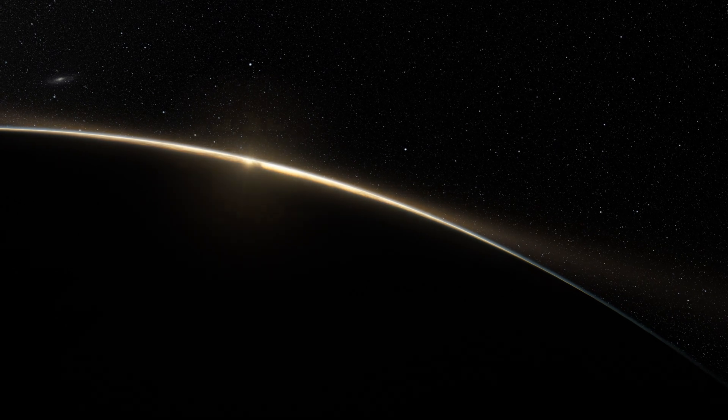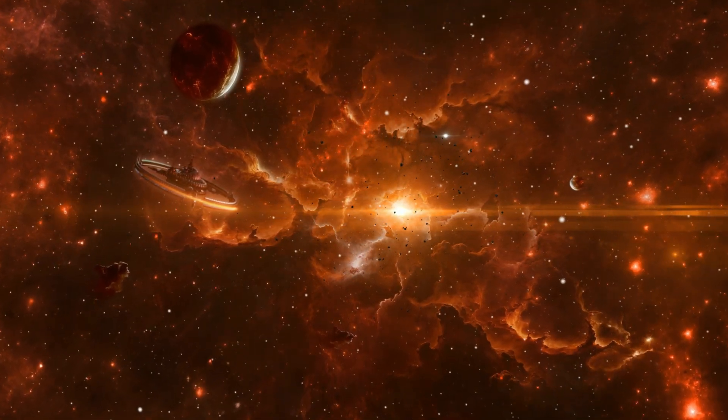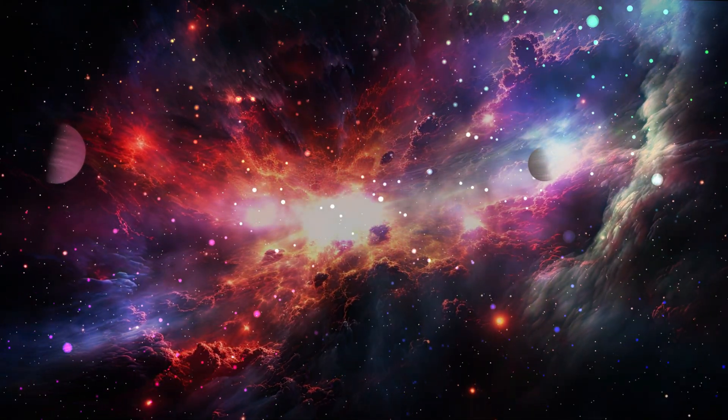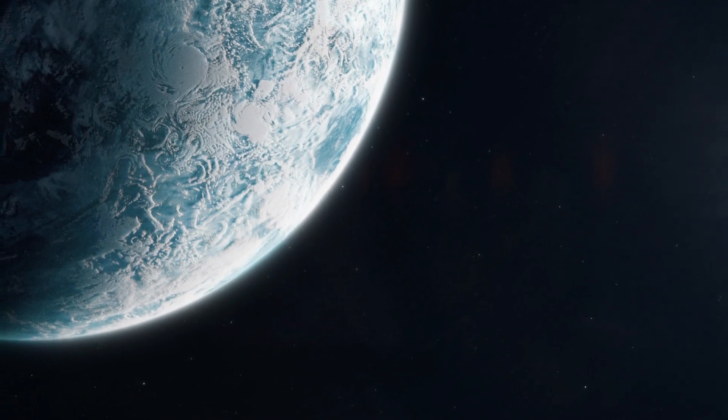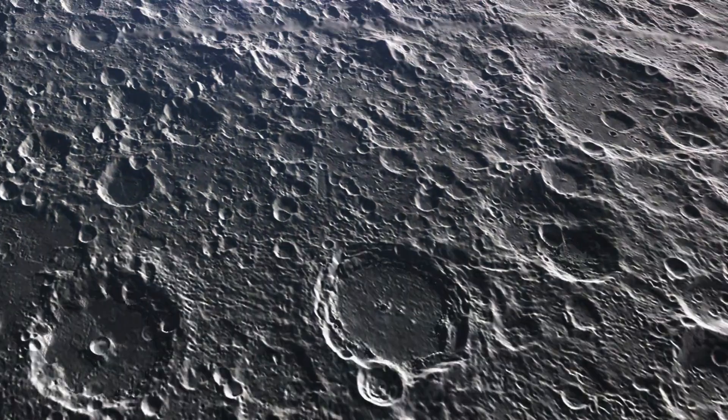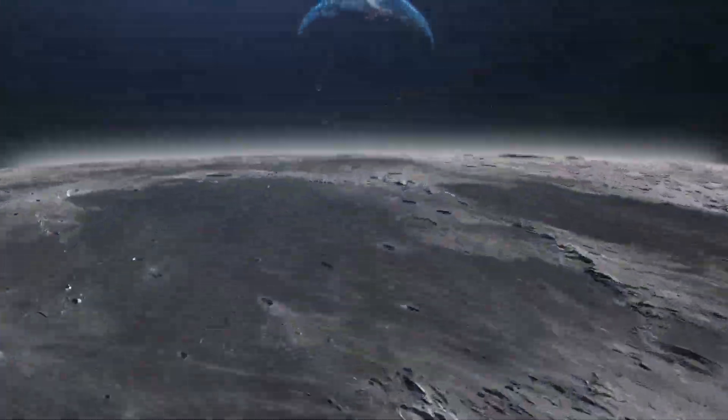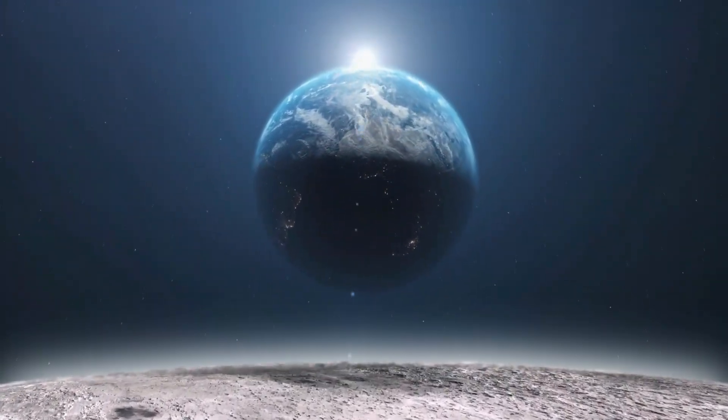The planet of eternal darkness. From the searing heat of Kepler-70b, we now journey to the opposite end of the spectrum, to a world shrouded in perpetual darkness. This is TrES-2b, the darkest planet ever discovered, and it's a place that would make even the bravest soul think twice about venturing too close. Located some 750 light-years away in the constellation Draco, TrES-2b is a gas giant that's about the size of Jupiter.